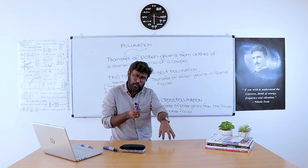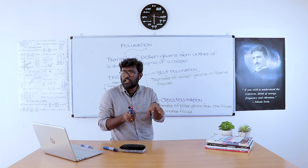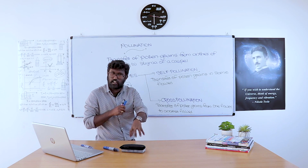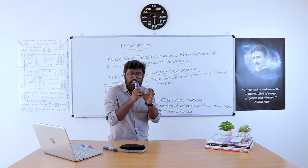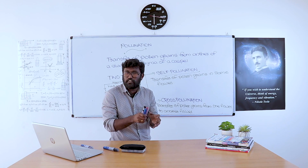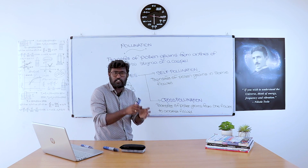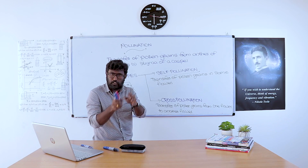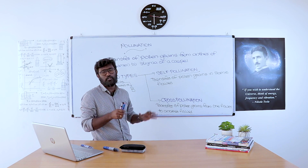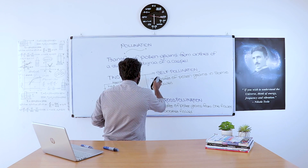Simply, the transfer of pollen grains is called pollination. Pollination is of two types: self-pollination and cross-pollination. Transfer of pollen grains in the same flower is called self-pollination. Transfer of pollen grains from one flower to another flower with the help of an agent is called cross-pollination. That's all about pollination.